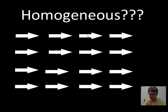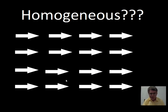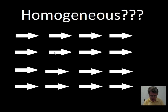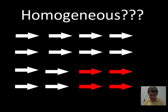Consider this pattern — a universe made of arrows all pointing to the right, all the same size. We have the same structure everywhere, so yes, this is a homogeneous universe. But what about a universe with red arrows in one corner? That's not homogeneous, because it looks different in that region. A homogeneous universe is the same everywhere — this other one has a red corner and is not homogeneous.